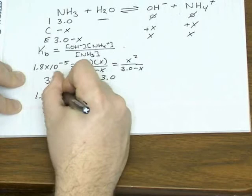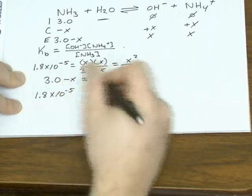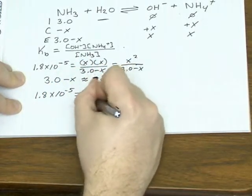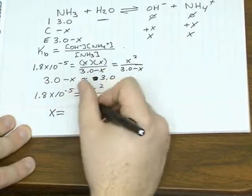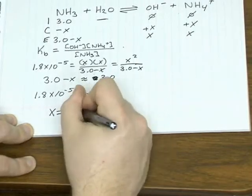So that approximates to 1.8 times 10 to the negative 5 equals x squared over 3. So that makes x equal to 0.0073.